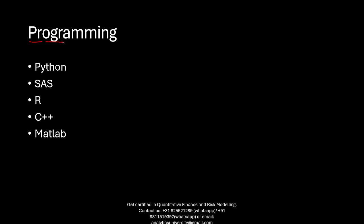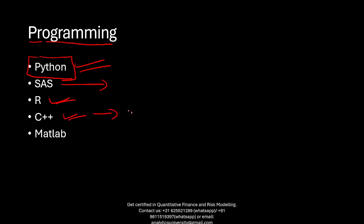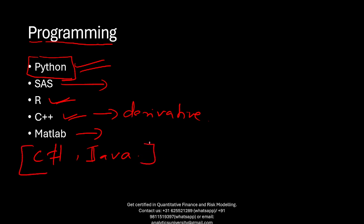On the programming side, you need experience with Python and at least one other language. Python is the most popular language in the quant field today. SAS is also used in banks, R is used in many places, C++ is used on the derivatives side, MATLAB has been in use for many years, and C# and Java are used in quant development areas. You can't master everything — pick one or two languages and that should be sufficient.